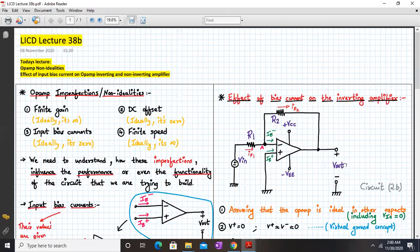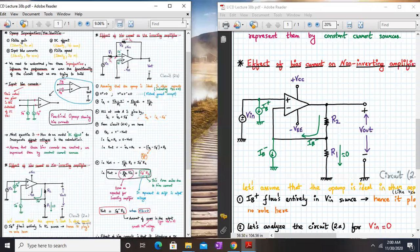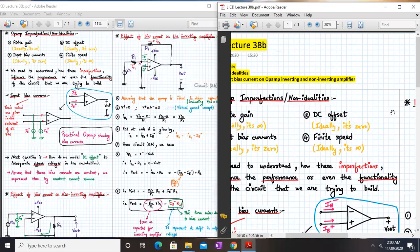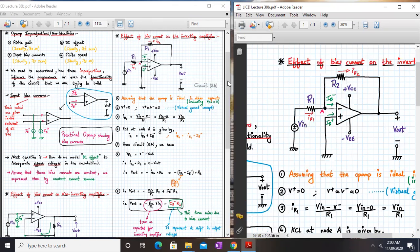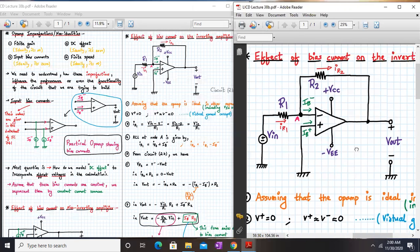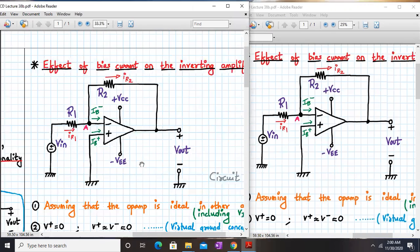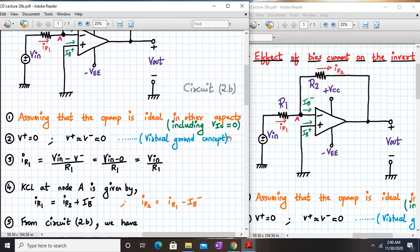Now let's see how it will affect the inverting amplifier configuration. So assume that this is the inverting amplifier and we are modeling Ib minus and Ib plus as not zero basically. Assuming that the op-amp is ideal in all other aspects.